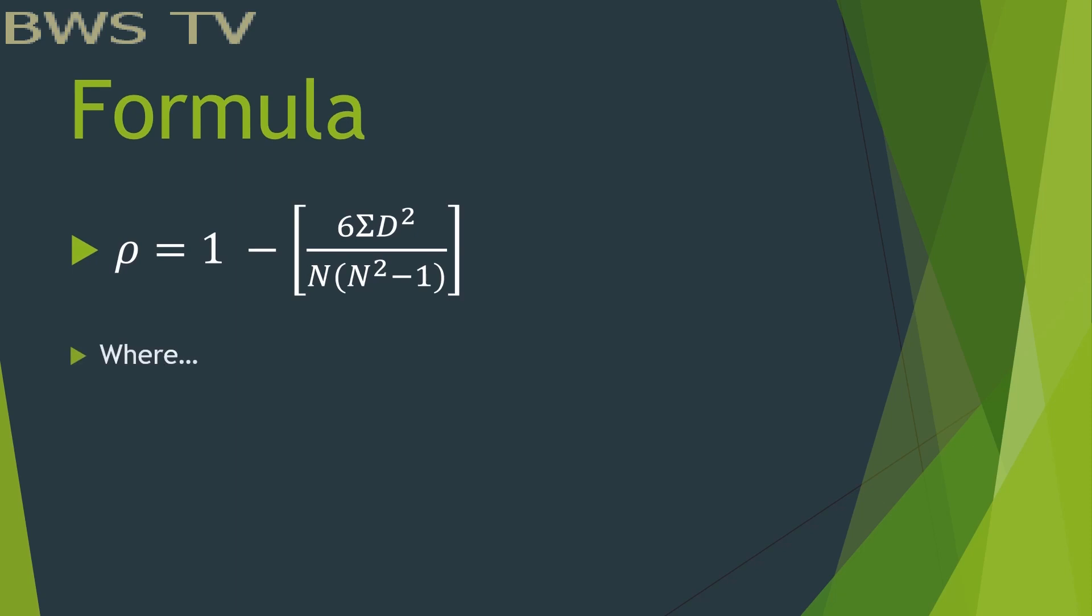Where that Greek letter symbolizes rho, d equals the difference between two sets of ranks, and n is the number of pairs.